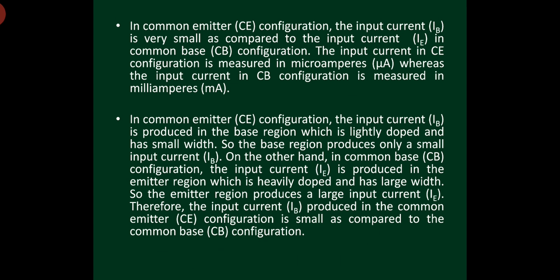In common emitter configuration, input current IB is very small compared to input current in common base configuration. In common base configuration, IE is the input current in the order of milliamps, and IC is also in milliamps. But in common emitter configuration, input current is IB which is in the microamp range, and output current IC is in the milliamp range. So in common emitter configuration, input current is less while output current is high.